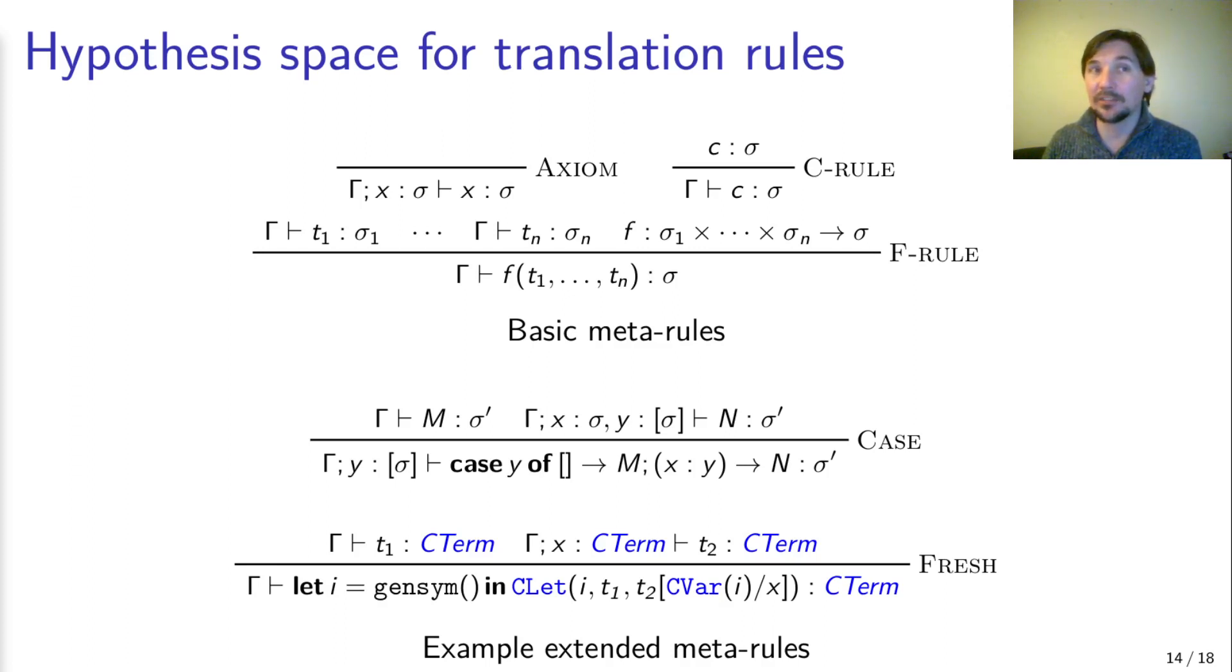We identified two general patterns that are often needed in translation rules, name generation and case separation. Some desugarings we studied fall outside of these extensions. In these cases, extra user guidance was needed to write the meta-rules. We also investigated user guidance in the form of limiting the set of meta-rules or restricting their order.